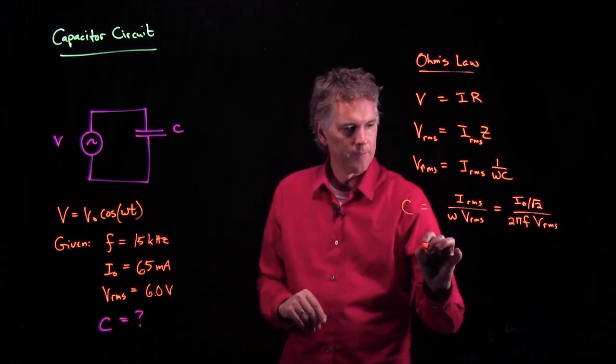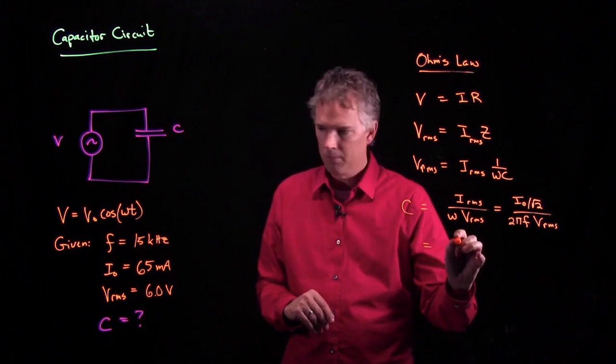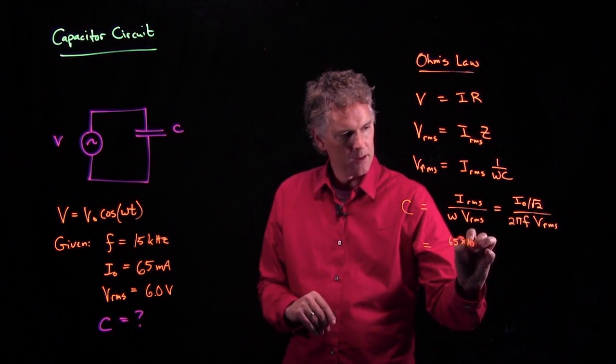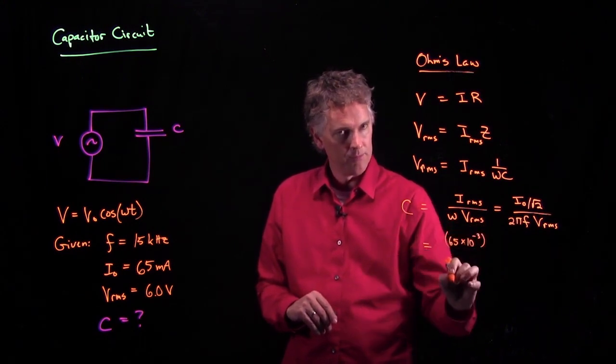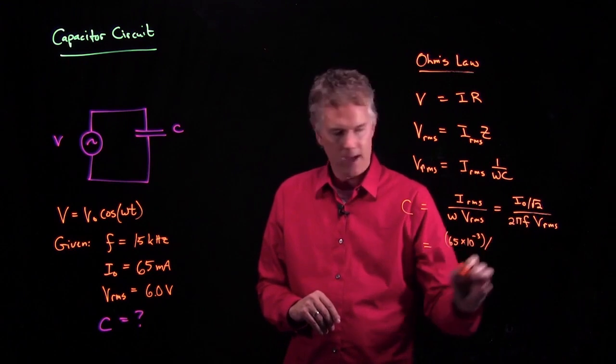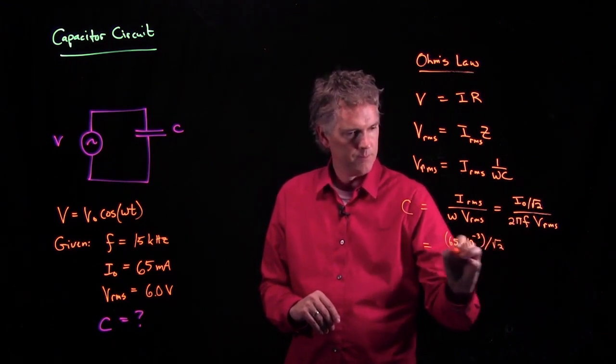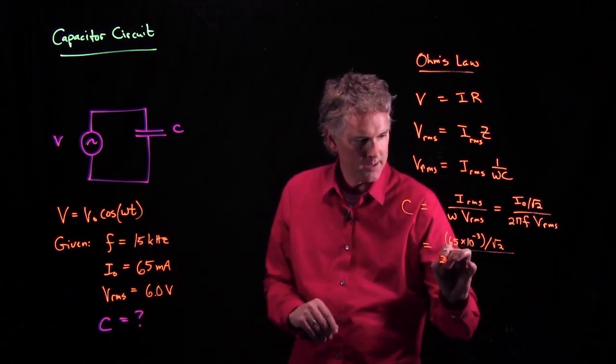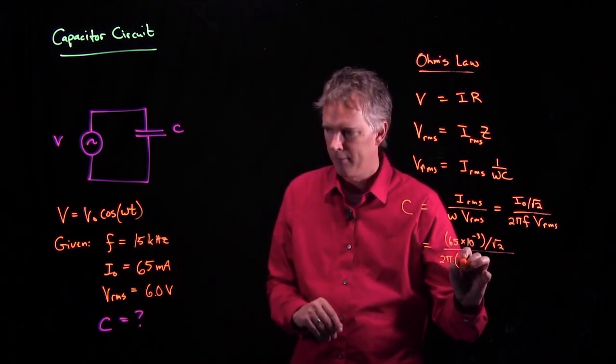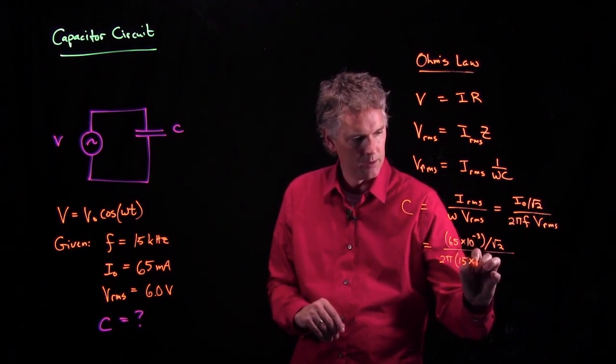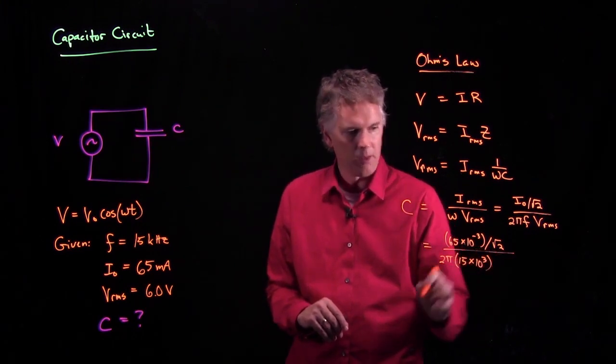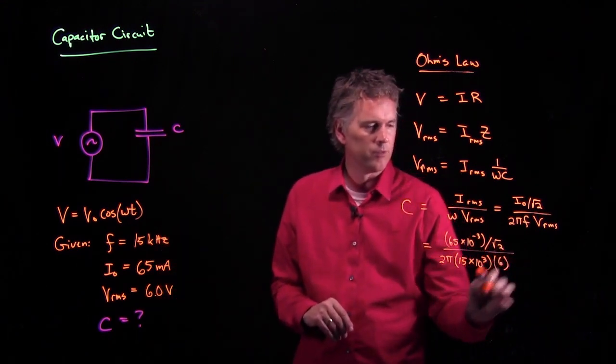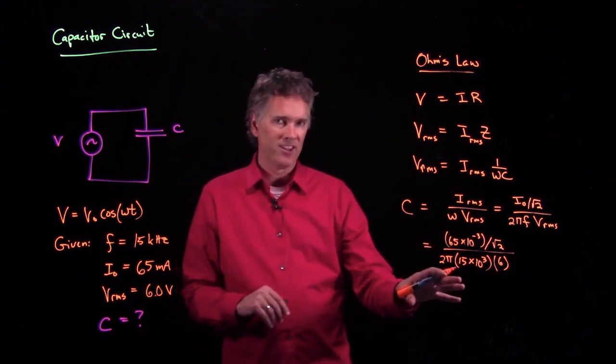So we can just plug them in and try it. All right, so let's plug this stuff in. We've got I0, which is 65 times 10 to the minus 3 amps. We're going to divide that by root 2. And then all of that is over 2 pi times F. F, we said, was 15 kilohertz, so 15 times 10 to the 3. And then we have V_RMS, which is just 6 volts.